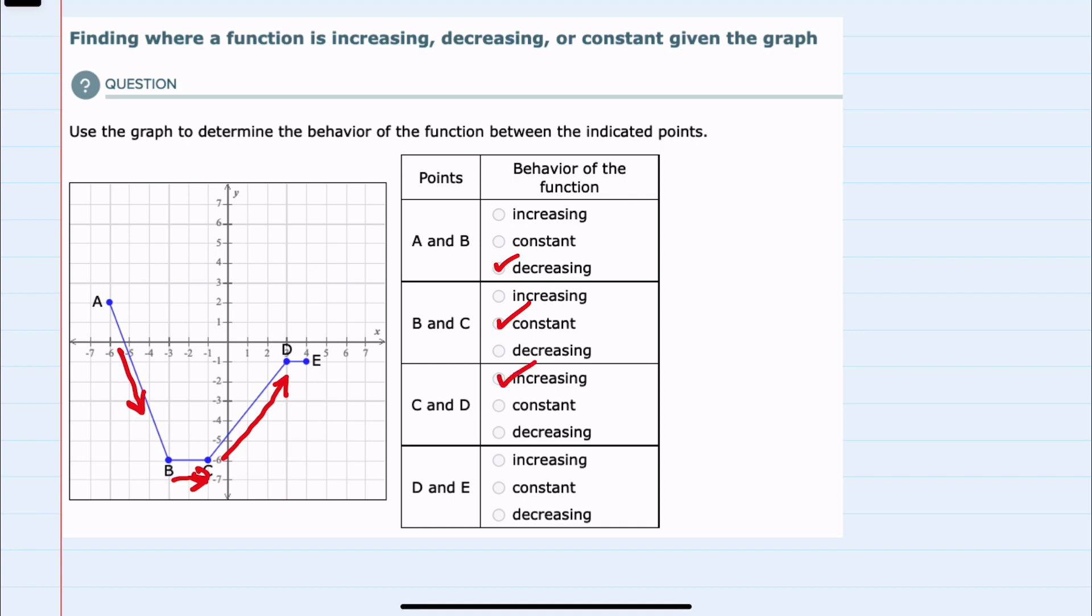And then from D to E, it is again the same height from left to right, so D to E is constant. The important thing for each of these is that we're looking at the height from left to right.